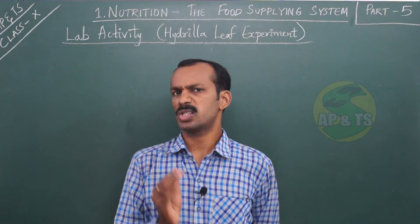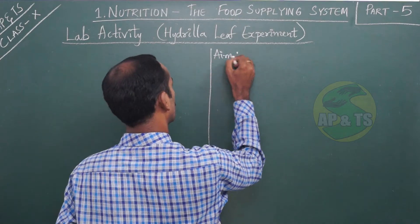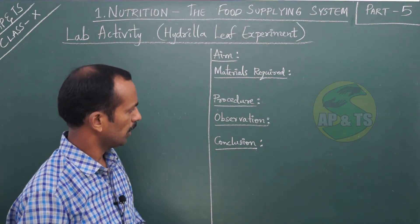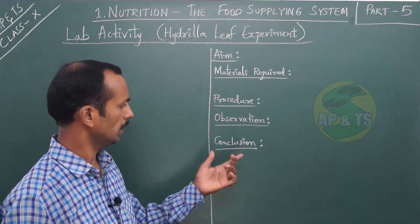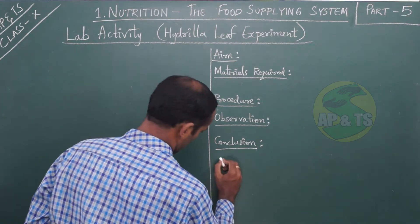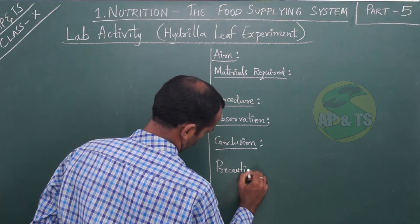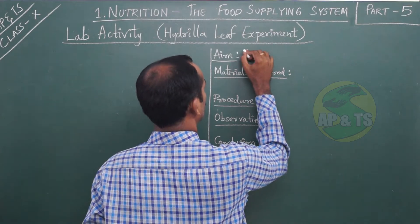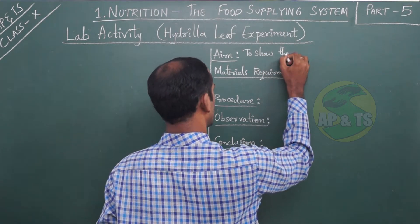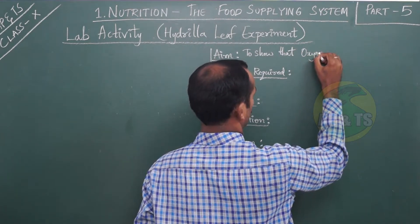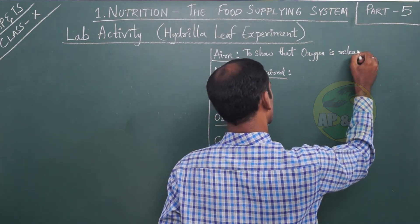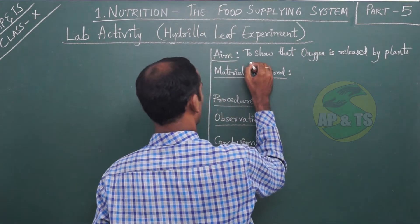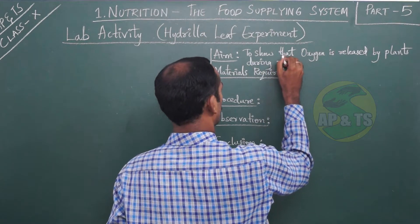Let us see the steps required for this activity: aim, materials required, procedure, observation, conclusion, and precaution. The aim of this experiment is to show that oxygen is released by plants during photosynthesis.